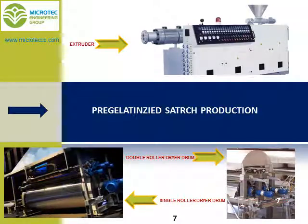There are three main methods to produce pre-gelatinized starch. 1. Extruder method — using a single or double screw extruder. 2. Using a single roller dryer. 3. Using a double roller dryer. Each method has its own advantages and disadvantages. You can see some photos of roller dryers and extruders on your screen.